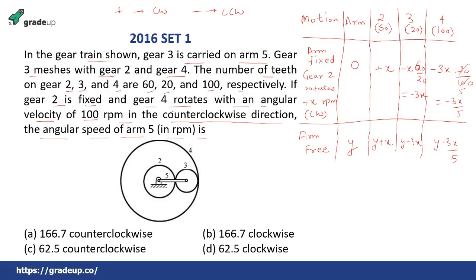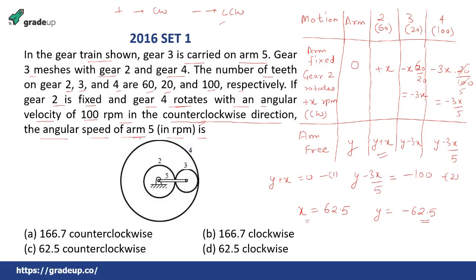Applying the given conditions: gear 2 is fixed, so y + x = 0 (equation 1). Gear 4 rotates at 100 rpm counterclockwise, which is negative, so y − 3x/5 = −100 (equation 2). Solving these two equations: x = 62.5 and y = −62.5. The angular speed of arm 5 is y = −62.5, the negative sign means counterclockwise. So the answer is 62.5 rpm counterclockwise, option C.